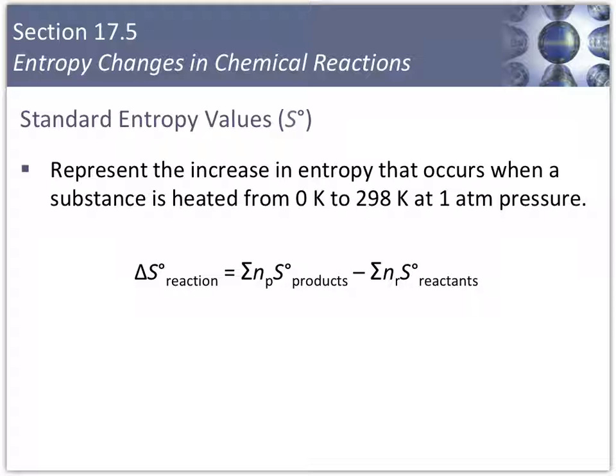Some standard entropy values are given in appendix 4 of your textbook. We can use those values and the equation shown here to calculate the entropy change for a reaction. This equation should look familiar. We did the same thing in chapter 6, but with enthalpy. Like enthalpy, entropy is a state function, so we can use this same type of calculation. And remember that little degree symbol means standard, and that's 298 Kelvin, or 25 degrees Celsius, and 1 atmosphere for your temperature and pressure conditions.